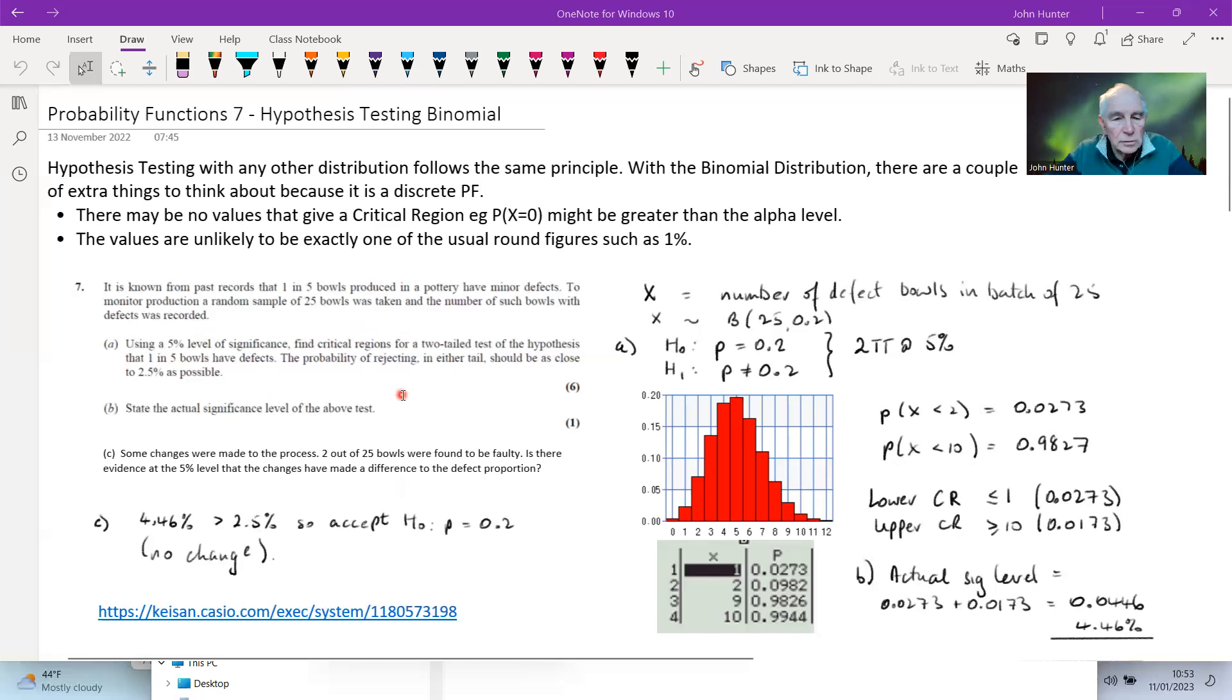Let's have a look at this example and hopefully it will start to become a bit clearer. It is known from past records that one in five bulls produced in a pottery of minor defects to monitor production. A random sample of 25 bulls was taken and the number of such bulls with defects recorded. So using a 5% level of significance, find critical regions for a two tail test of the hypothesis that one in five bulls have defects. So the random variable is the number of defect bulls in a batch of 25, our sample size. So that is binomially distributed with an N of 25 and a P of 0.2.